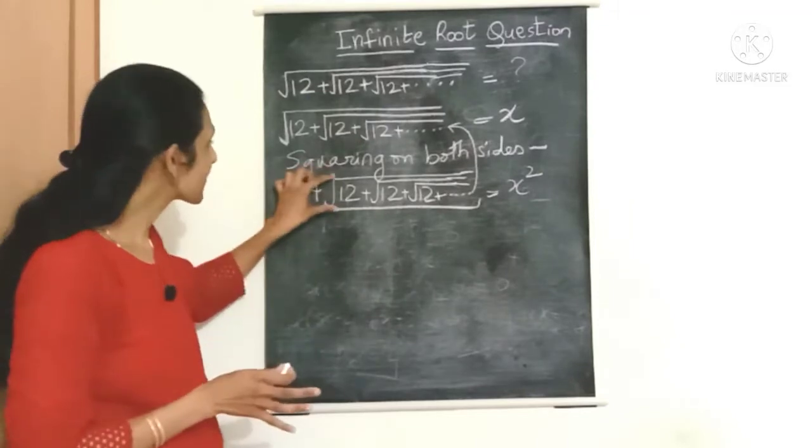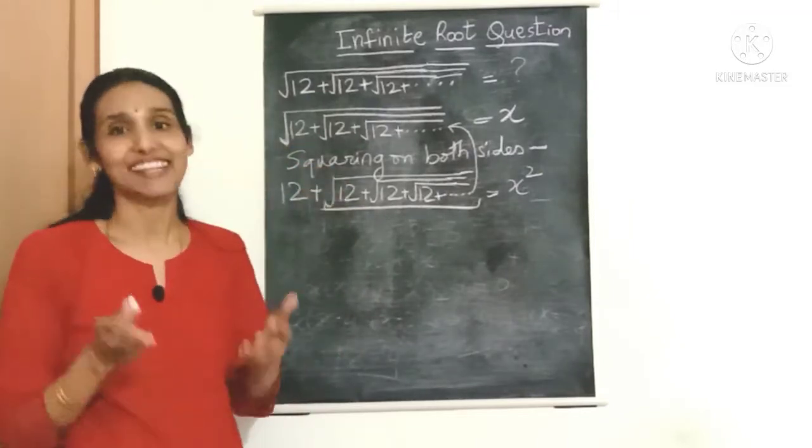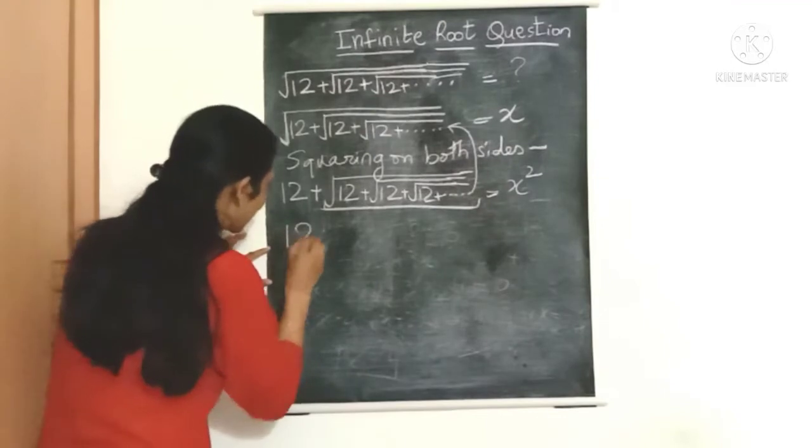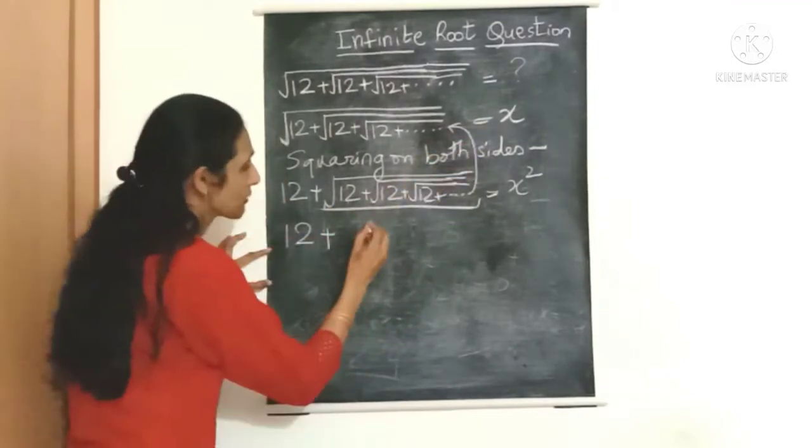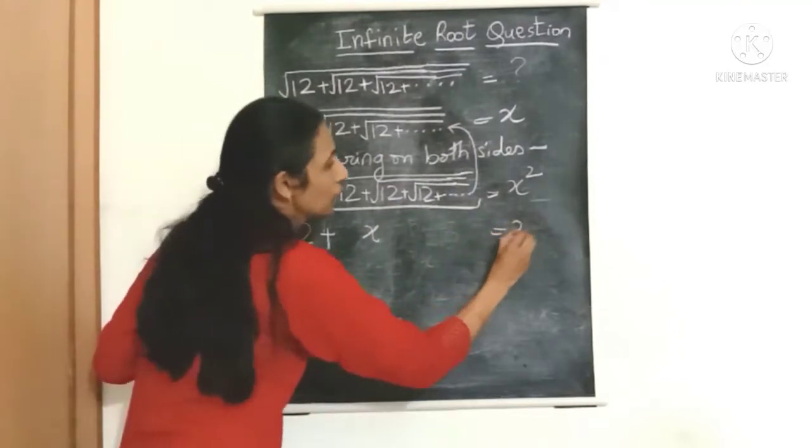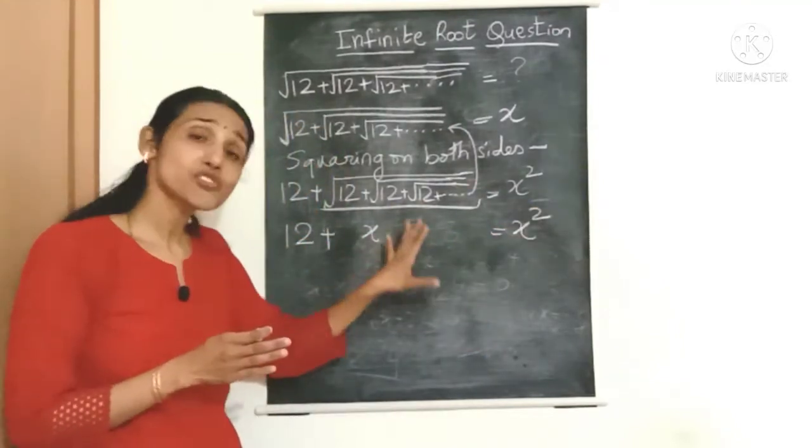And we have called this expression as x, so can I also call this expression as x? Yes we can, only because these two expressions are one and the same. So we can say that we'll get 12 plus, now this entire thing I'm going to replace it by x, equal to x square.